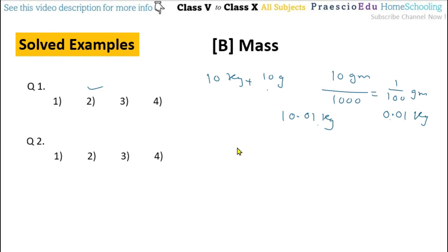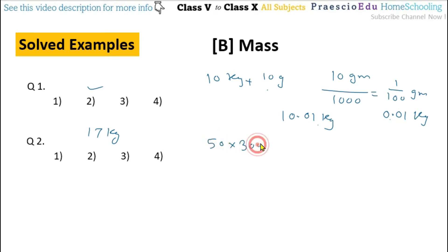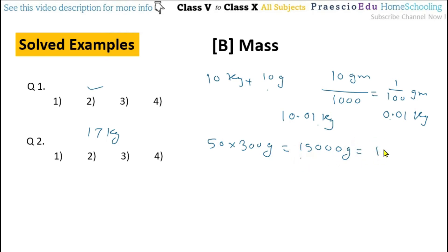Second solved question: how much sugar remains? Total was 17 kg of sugar and 50 persons each get 300 grams. So 50 multiplied by 300 grams equals 15,000 grams, which after dividing by 1000 is 15 kg. So 17 kg minus 15 kg means 2 kg remains, and 2 kg is given in option number 3.